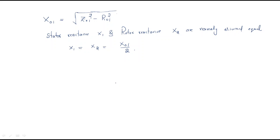We can also find the rotor resistance R2: from R01, we remove R1 to get R2. Here R01 is the total resistance referred to primary, R1 is the primary stator resistance, and R2 is the rotor resistance. From all these equations we can find the short circuit current for normal supply voltage.